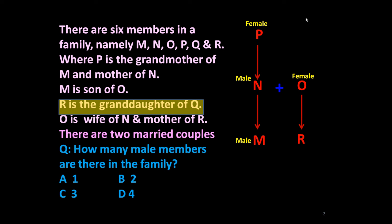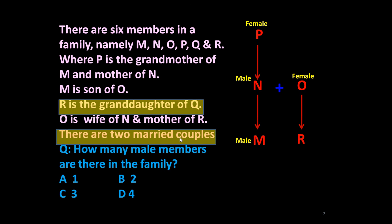Now revisiting the statement: R is the granddaughter of Q. Looking at the tree, R is already the granddaughter of P. So if R is also the granddaughter of Q, it means P is married to Q. Since P is female, Q must be a male member. This gives us the second married couple — P and Q — completing the family tree with all information incorporated.